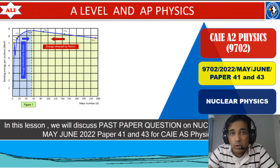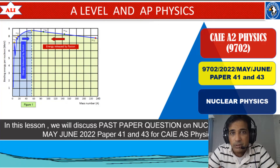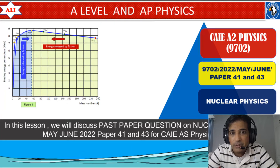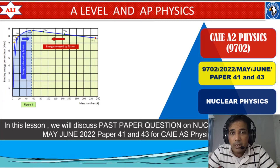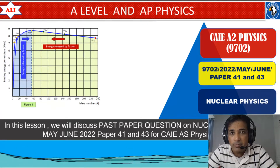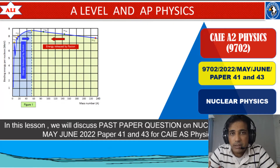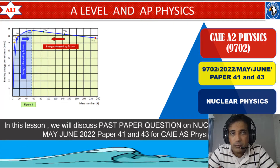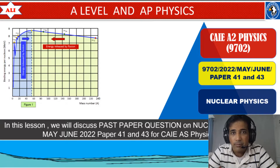We will talk about Binding Energy and how we can state binding energy in a proper way so you can get full marks. Then we will talk about binding energy per nucleon and mass number, and how we can sketch a graph between binding energy per nucleon and mass number.